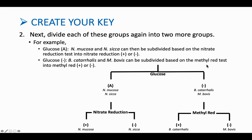Coming over to this side of the flowchart, we decided the methyl red test was the way to differentiate the other two organisms. One was positive and one was negative. So that same logic applies here. If we performed the glucose test and it was negative, and then negative for methyl red, we know it was M. bovis.